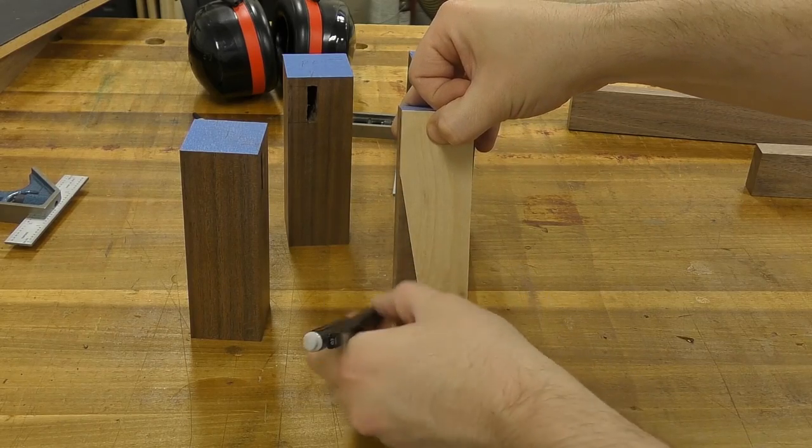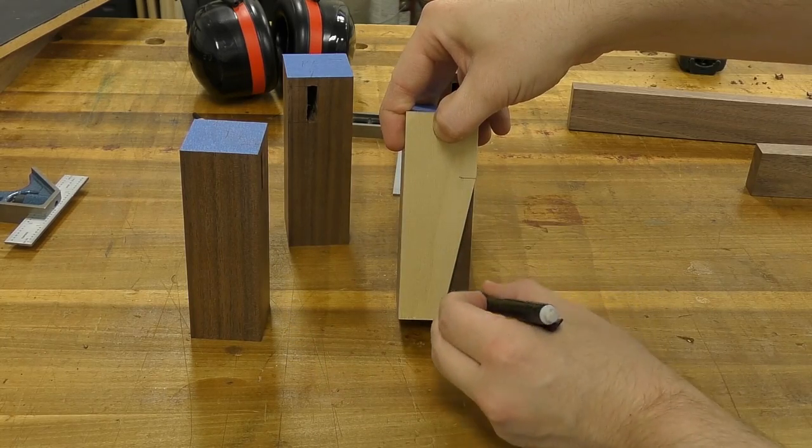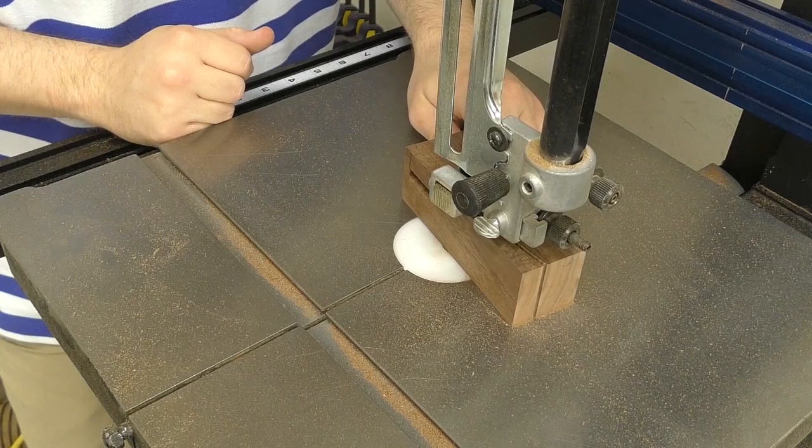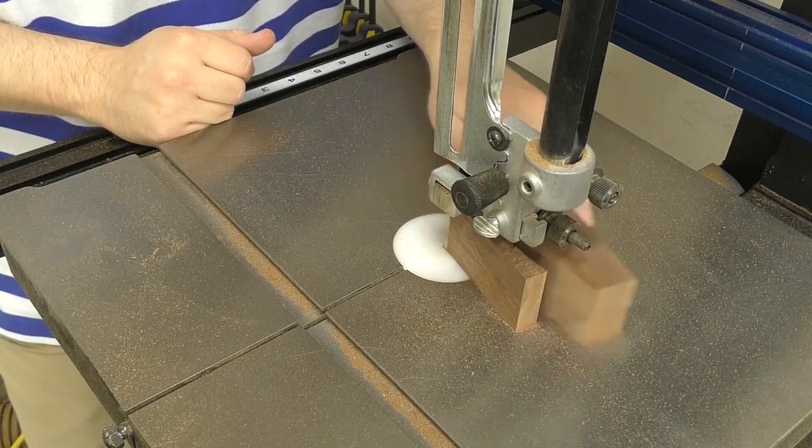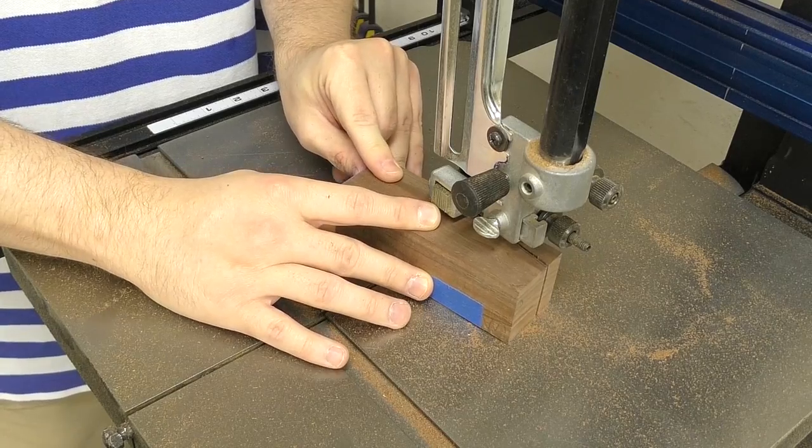Next, using a template, I mark the feet for the double tapers. I rotate the template 90 degrees and then mark the other side. Over at the bandsaw, after removing the first taper, I will tape the scrap piece back on to stabilize the foot before removing the second taper.